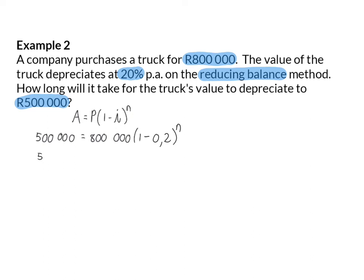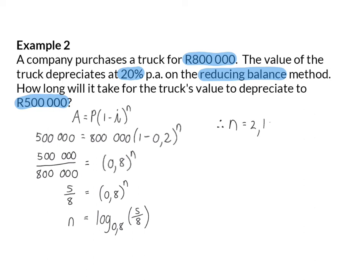So once again, we're going to start off by taking the 500,000 rand on the left and dividing it by the 800,000 rand that we want to get rid of on the right. Inside the bracket, we can once again simplify to 0.8, and that will be to the power of n, and then we can simplify and rewrite in log form. And when you now calculate n, you will see that n is equal to 2.1062. And because the depreciation rate is yearly, this will be in years.